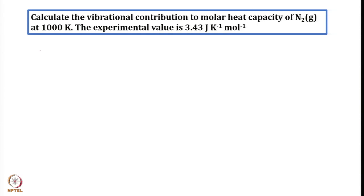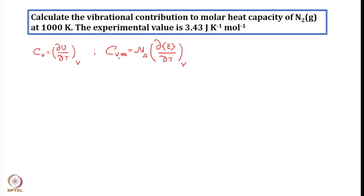Heat capacity Cv is equal to del U by del T at constant volume. We also know that CvM is equal to Avogadro's constant into the temperature derivative of mean energy at constant volume. So why don't we first get an expression for the mean energy? Mean energy is minus 1 by Q into del Q by del beta at constant volume. Let us do that.